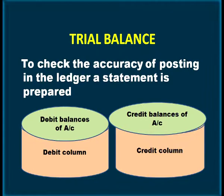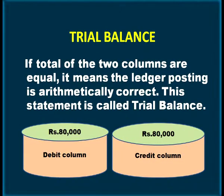This statement contains a debit column and a credit column. In the debit column we write the debit balances of accounts, and in the credit column we write the credit balances of accounts. If the totals of the two columns are equal, it means the ledger posting is arithmetically correct. For example, if the debit column total is 80,000, the credit column total should also be 80,000 — then it is arithmetically correct, and the statement which shows this is called the trial balance.